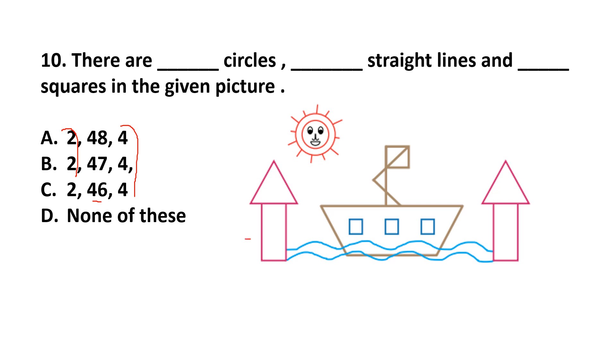In this figure, there are 6 straight lines. In this sun, there are 13 straight lines. 12 outside the sun and 1 is in its mouth. In the boat, there are 22 straight lines. In this figure, 6 straight lines. When we add all of these, we get 47. So, our answer is option B. 2 circles, 47 straight lines and 4 squares.